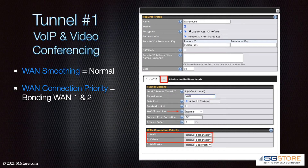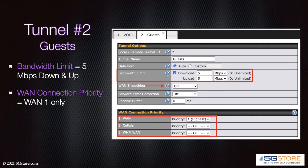Tunnel number one is the first tab shown by default. We'll call this tunnel VoIP. WAN smoothing will be set to normal, and we'll set both WAN and cellular to priority one for a bonded connection. Wi-Fi WAN will only be used for failover, so that is set to priority two.